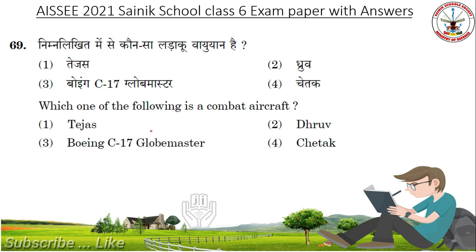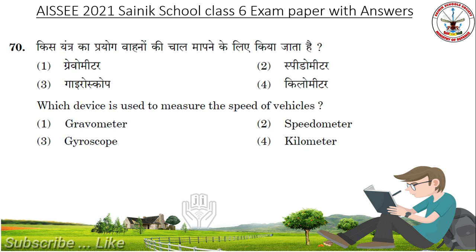Which of the following is a combat aircraft? Options: Tejas, Dhroum, Boeing C-17 Globemaster, Chaitra. The answer is Tejas. Which device is used to measure the speed of vehicles? Options: Gravometer, Speedometer, Gyroscope, Kilometer. The answer is Speedometer.